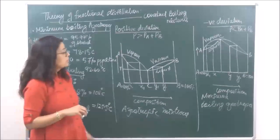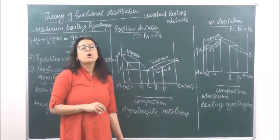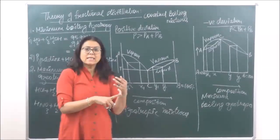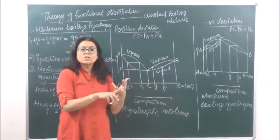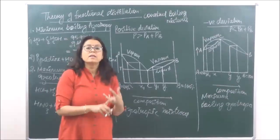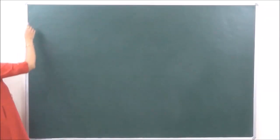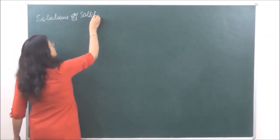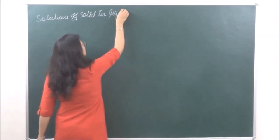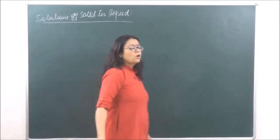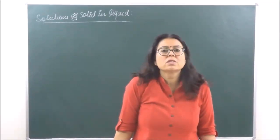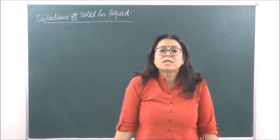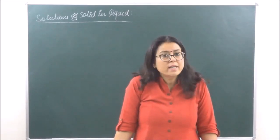These are what we understand by azeotropic mixtures or constant boiling mixtures. Today we are going to discuss the second type of solutions. We have discussed gas and liquid, then liquid and liquid. The third solution we are going to discuss today is solids and liquids. Solutions of solids and liquids are a very common kind. In our day-to-day life we have sugar in water and salt in water — these are homogeneous mixtures taken as solutions in our daily lives.